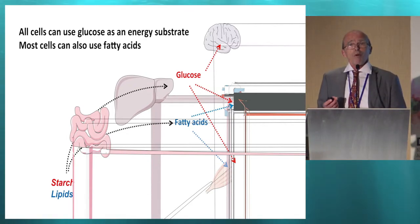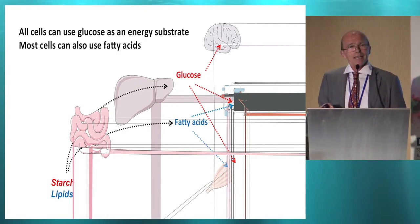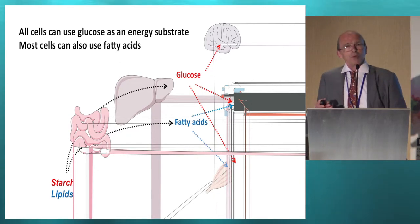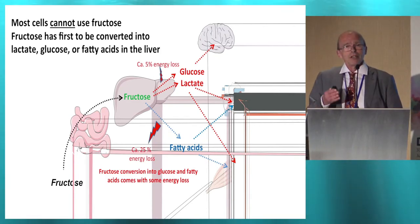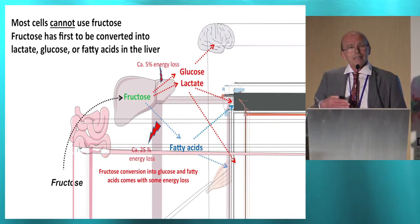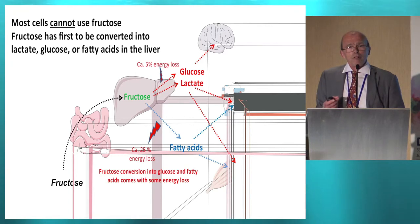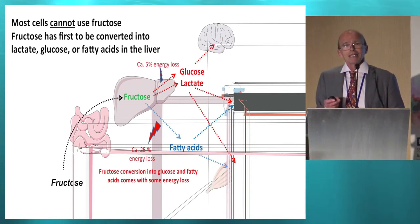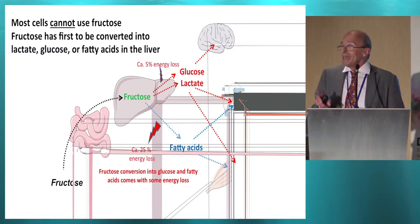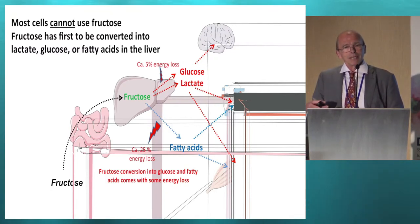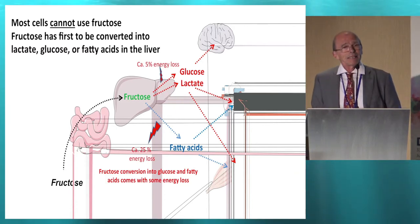All of your cells can use glucose, and most cells can also use fatty acids. When you eat starch or glucose, you absorb glucose which can be utilized in cells right away. For fructose it's different, because fructose is not a constant food in our diet. Nature has evolved so that only a few tissues — mainly the liver, but also the gut and kidney — express fructose-metabolizing enzymes. Their role is to convert fructose mainly into glucose and lactate, which can be used as energy substrates outside the liver, and to some extent into fatty acids.